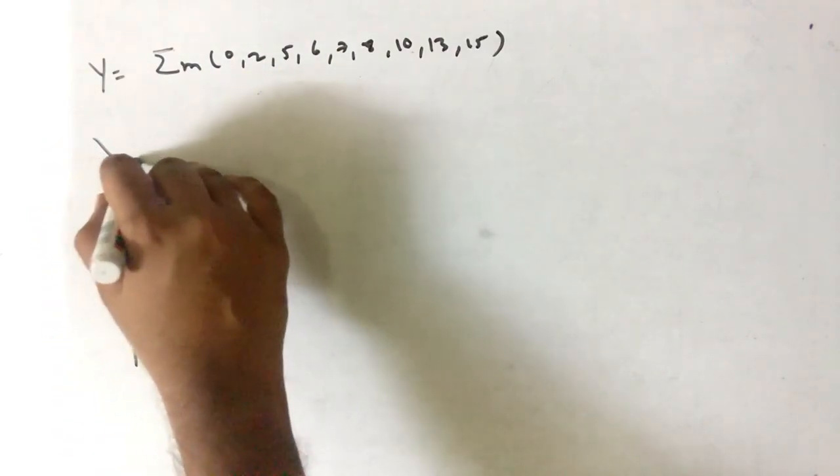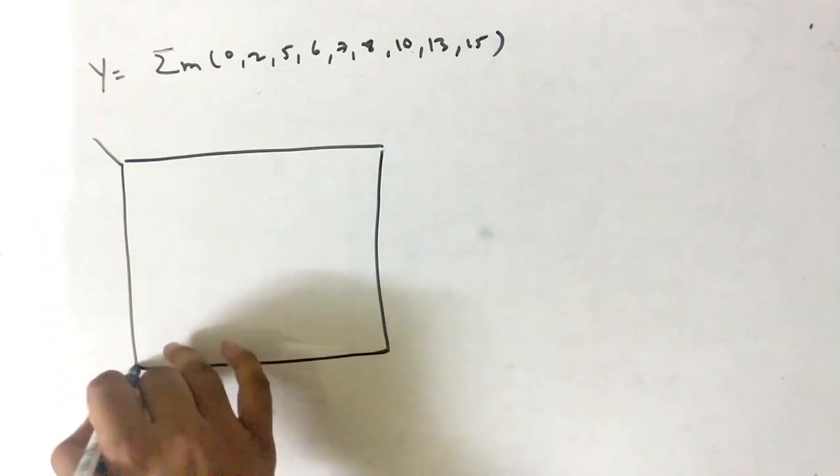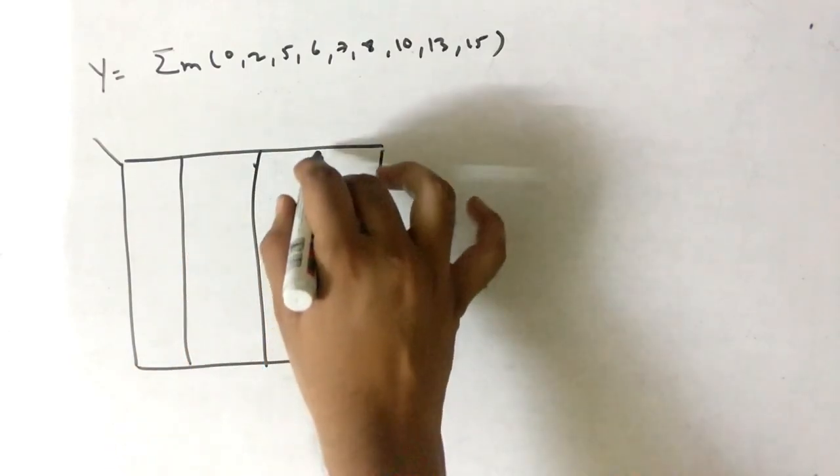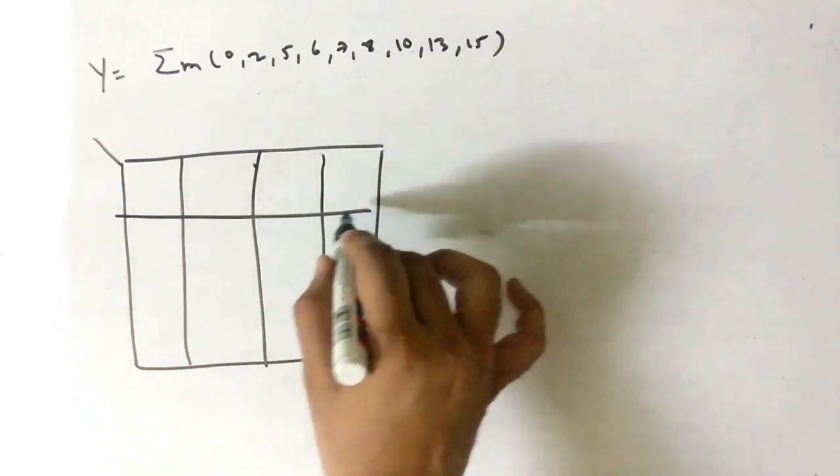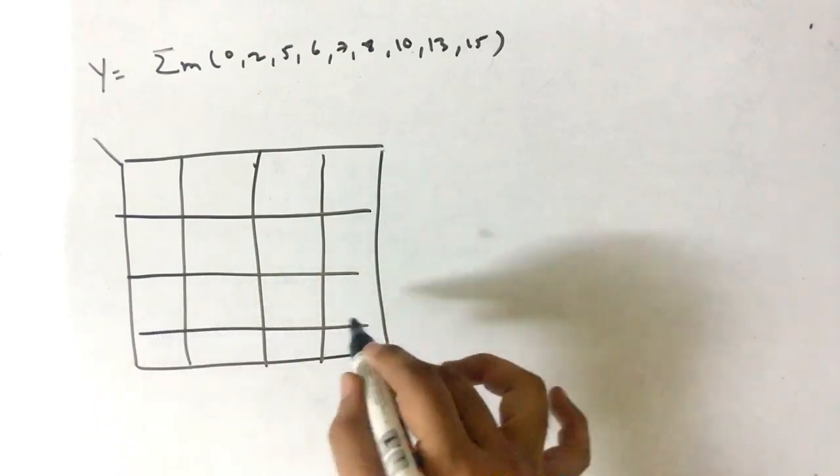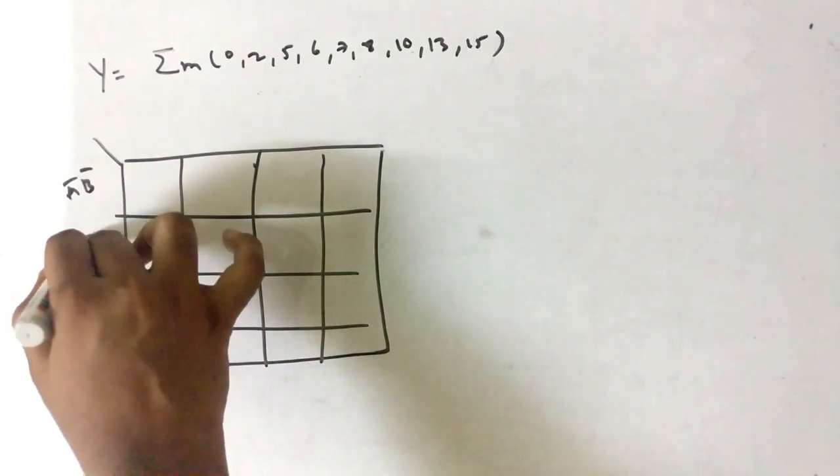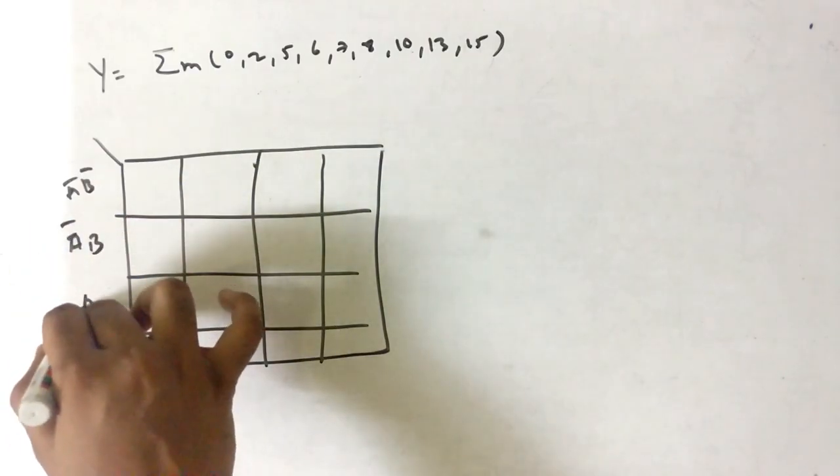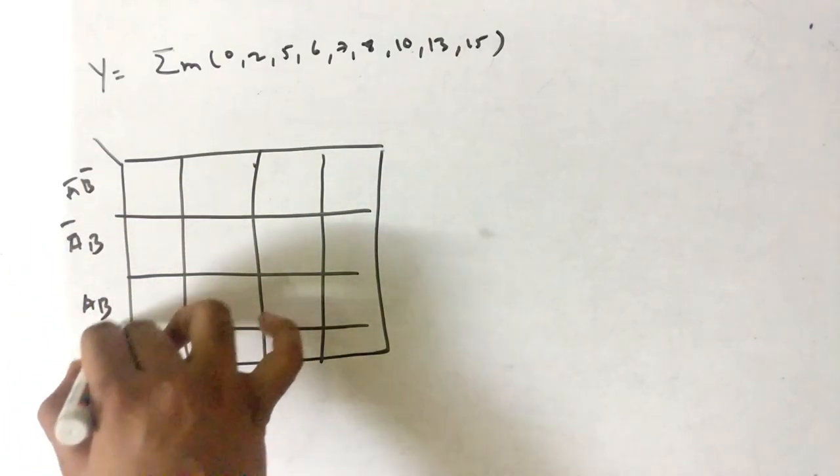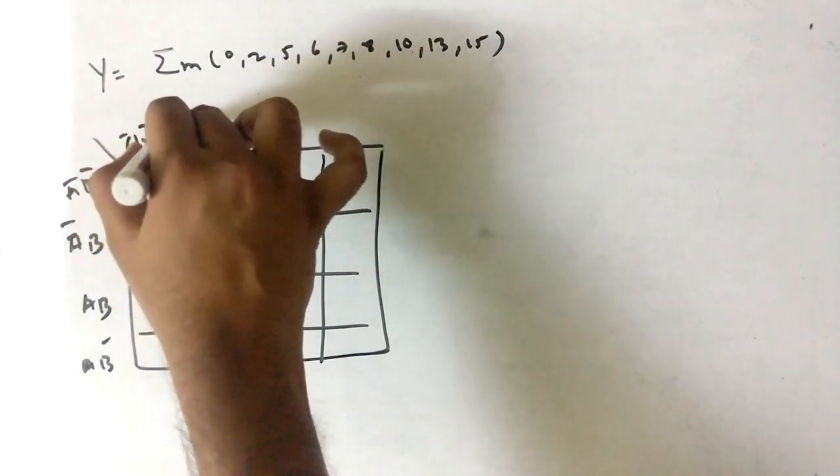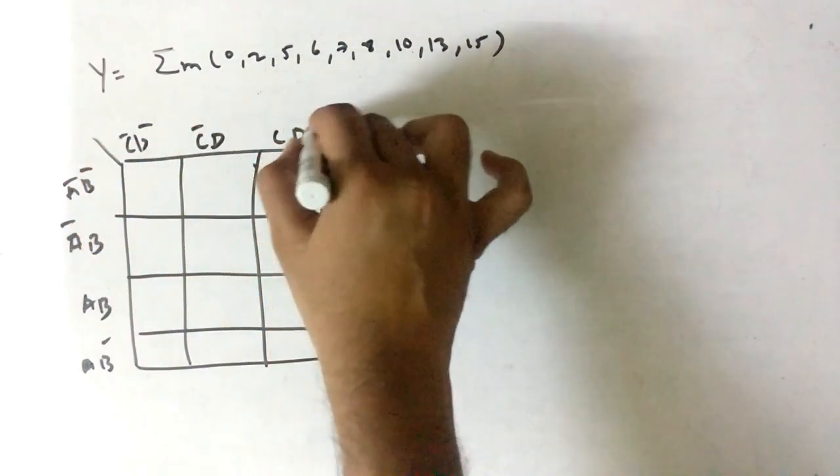First you will require the K-map. This K-map is of SOP like the output should be 1. The combinations here we have is a bar b bar, then we have a bar b, then we have a b, then we have a b bar. Similarly here we have c bar d bar, then we have c bar d, then c d, then we have c d bar.